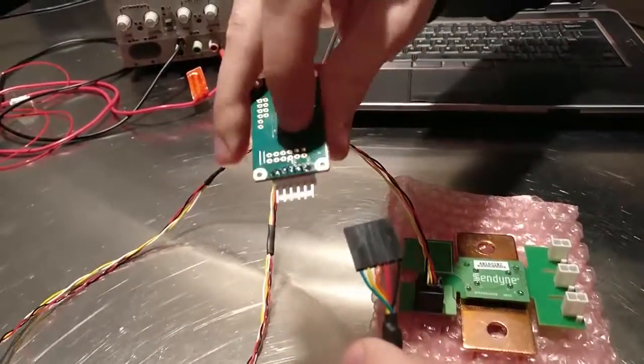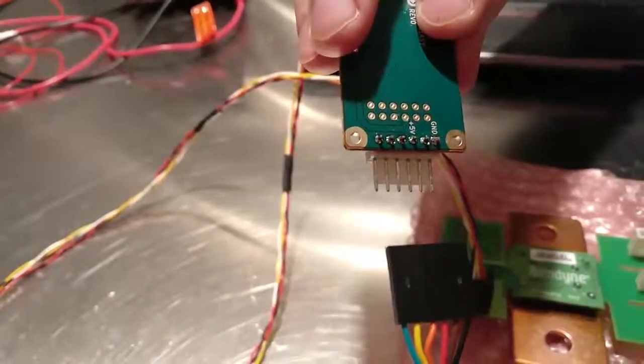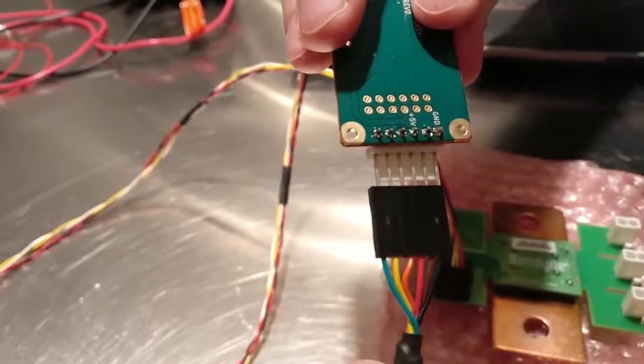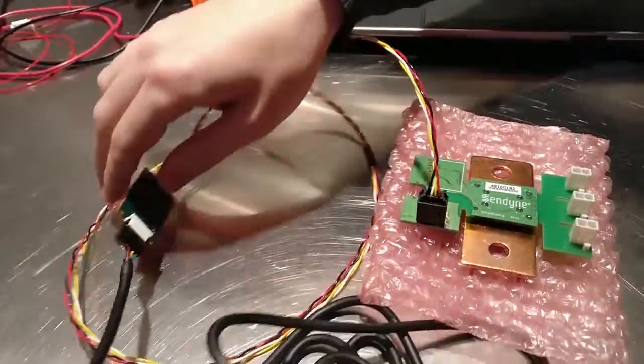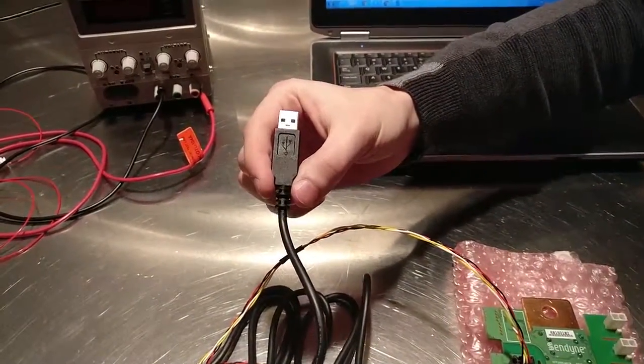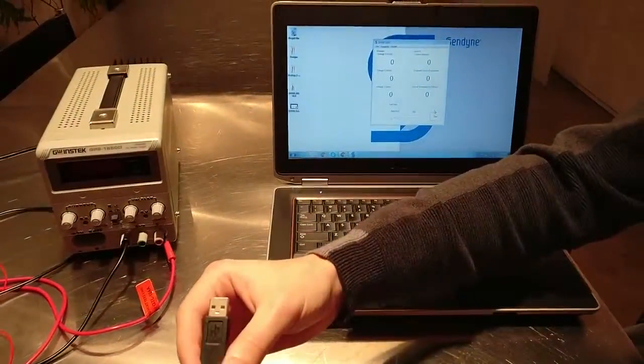Looking at the SCD, you'll find that one of the labels says ground, so black goes to ground. Now we take the FTDI cable and connect it to the host, in this case a laptop.